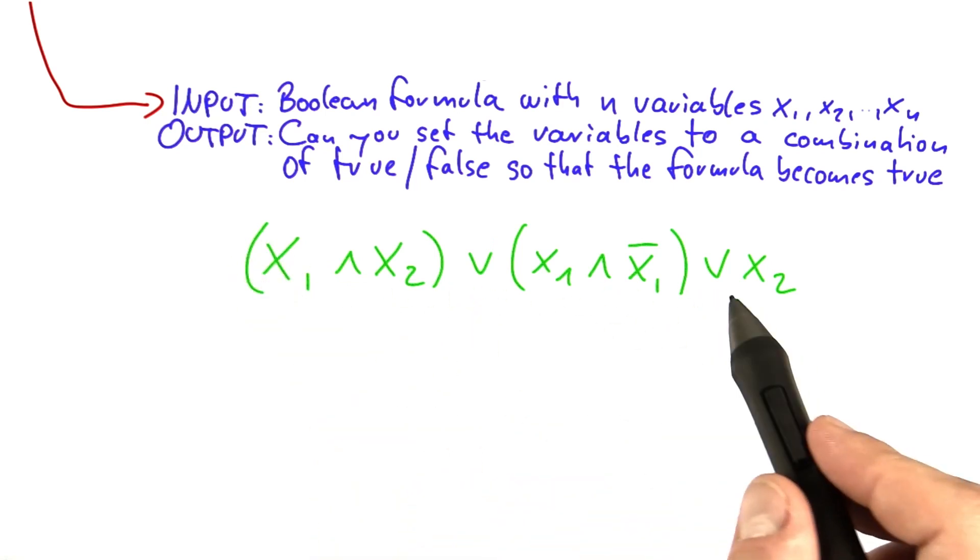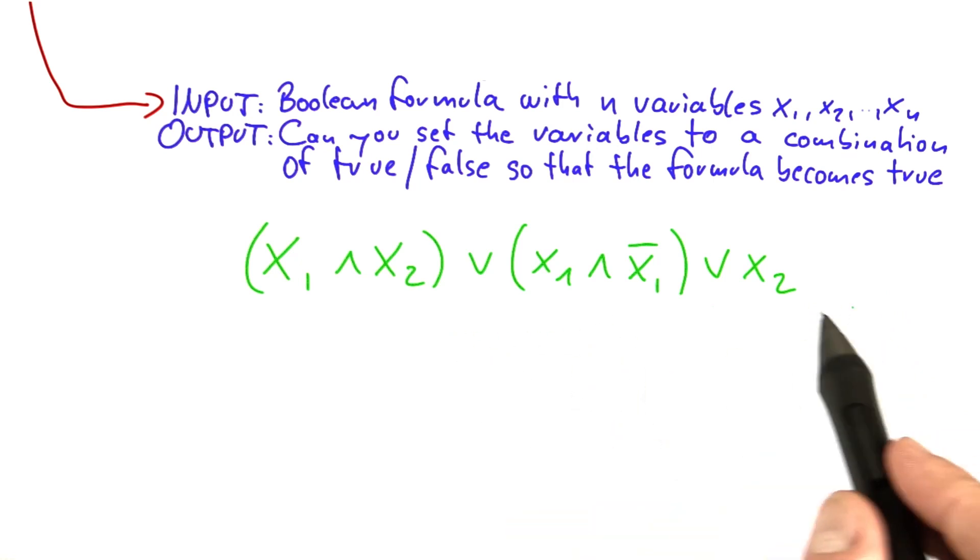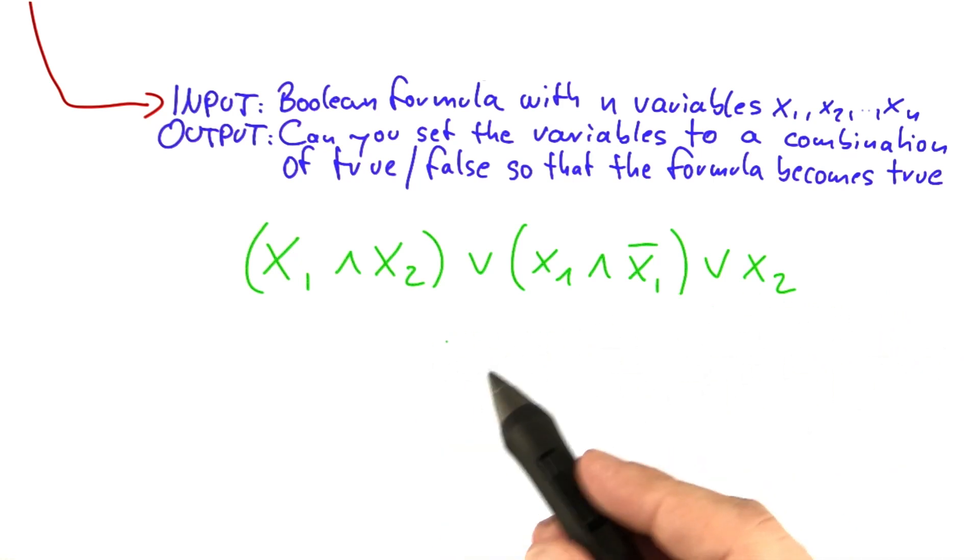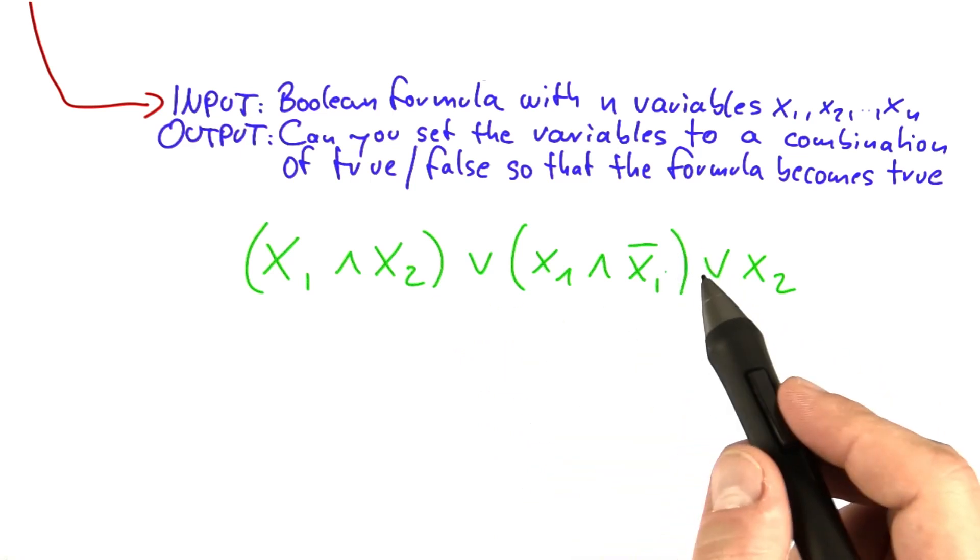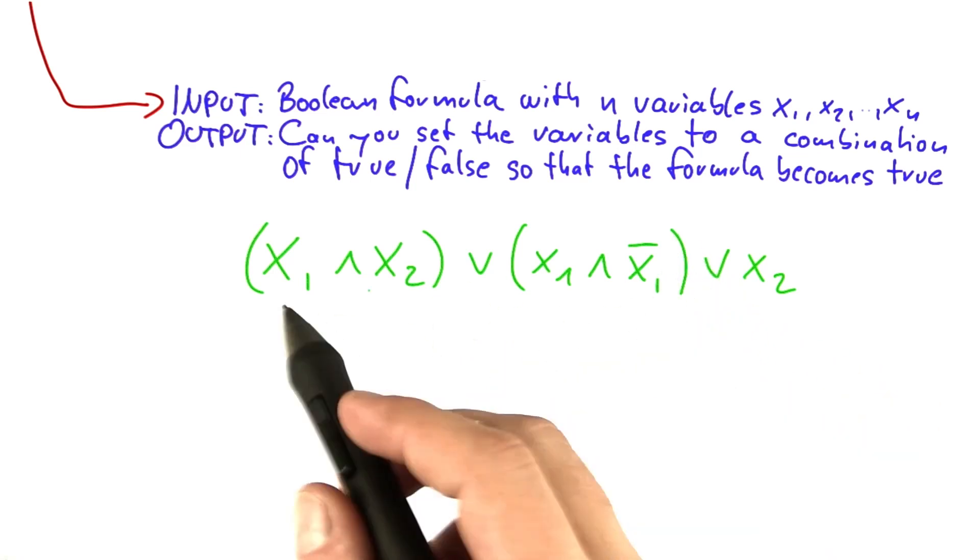It's okay to write 2 or 3 or 4 ors or 2 or 3 or 4 ands or even more if you want to, without doing those brackets. It doesn't really make a difference in the way that the formula evaluates.